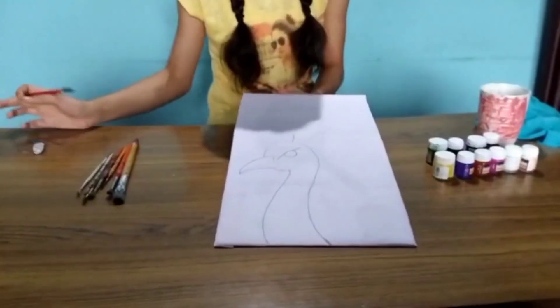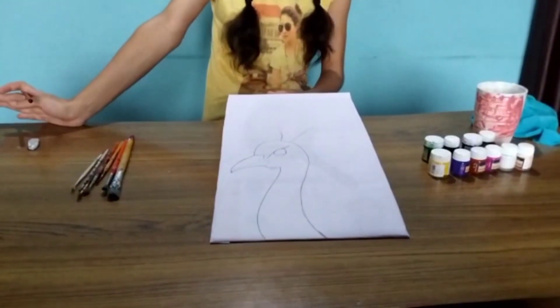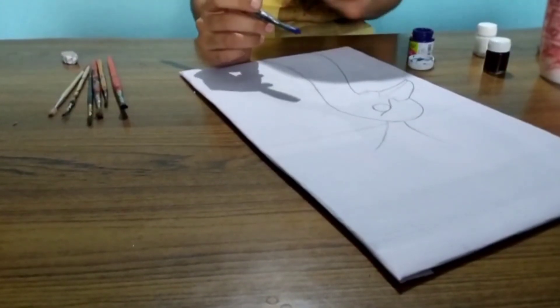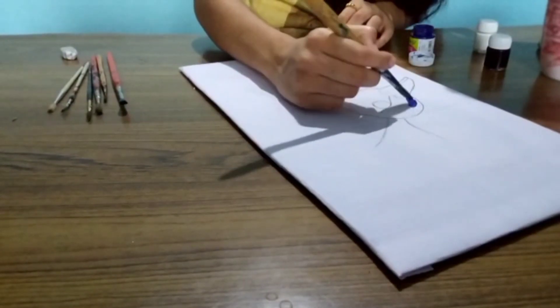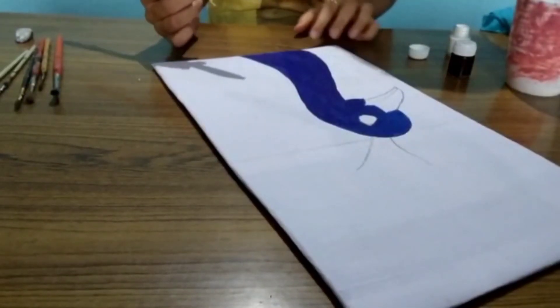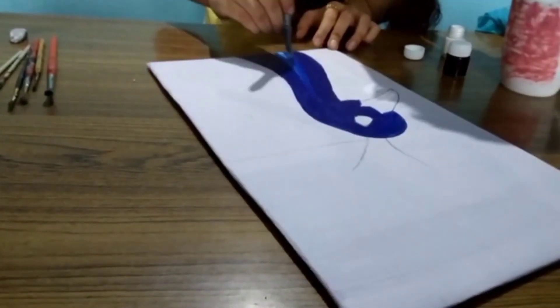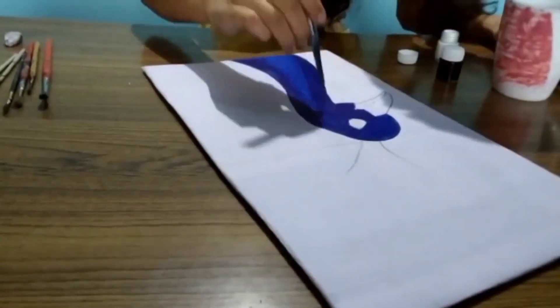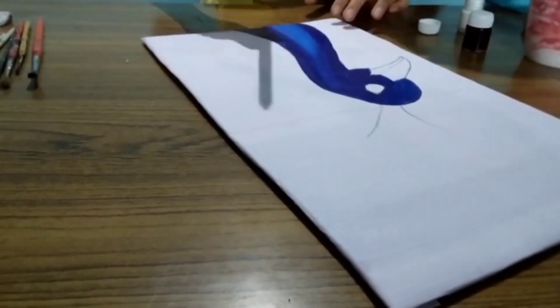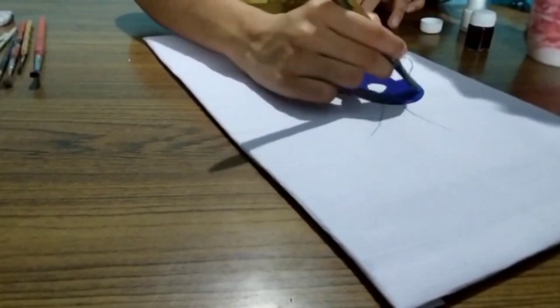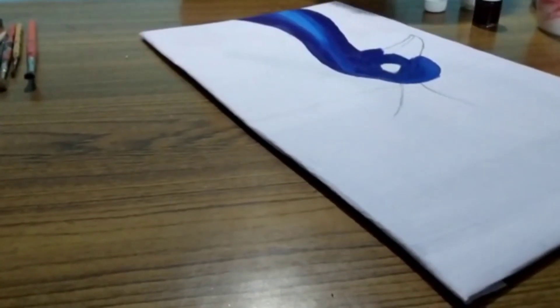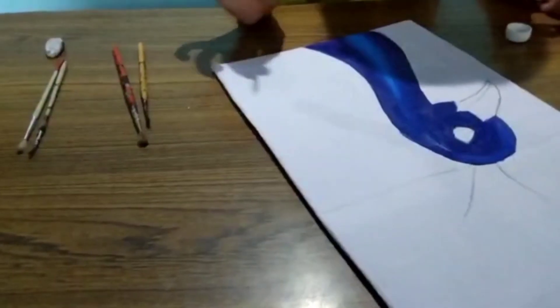First, we are going to draw an outline and now we will start painting. First we are going to take a dark blue color in our brush. Take a white color in our brush. Now we are going to take a black color.